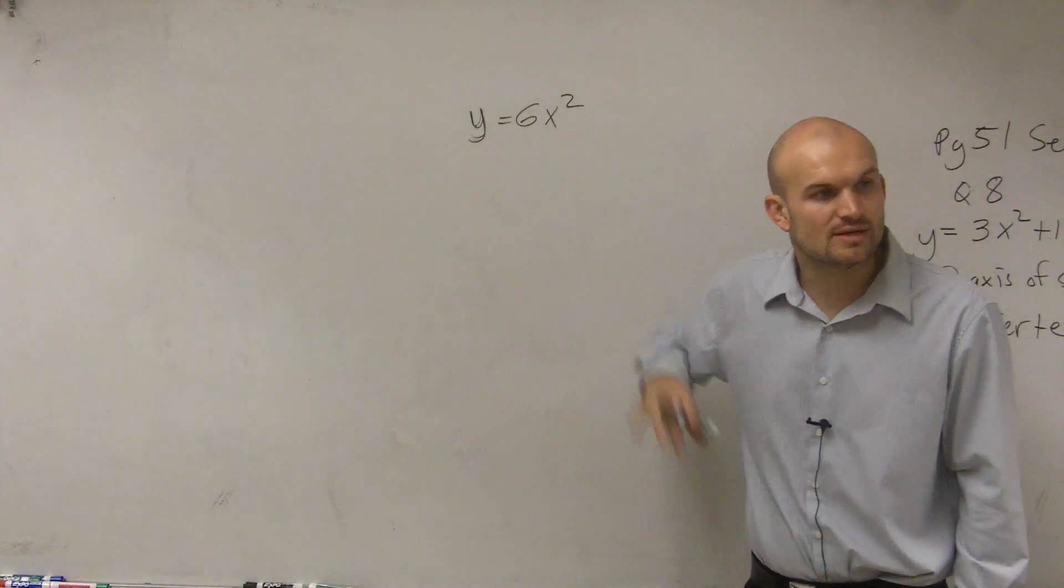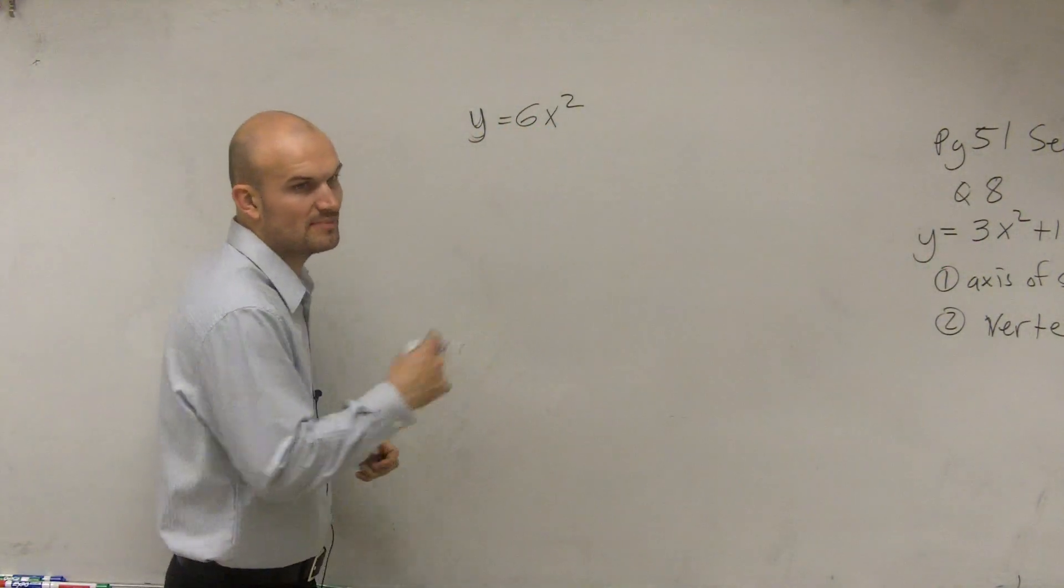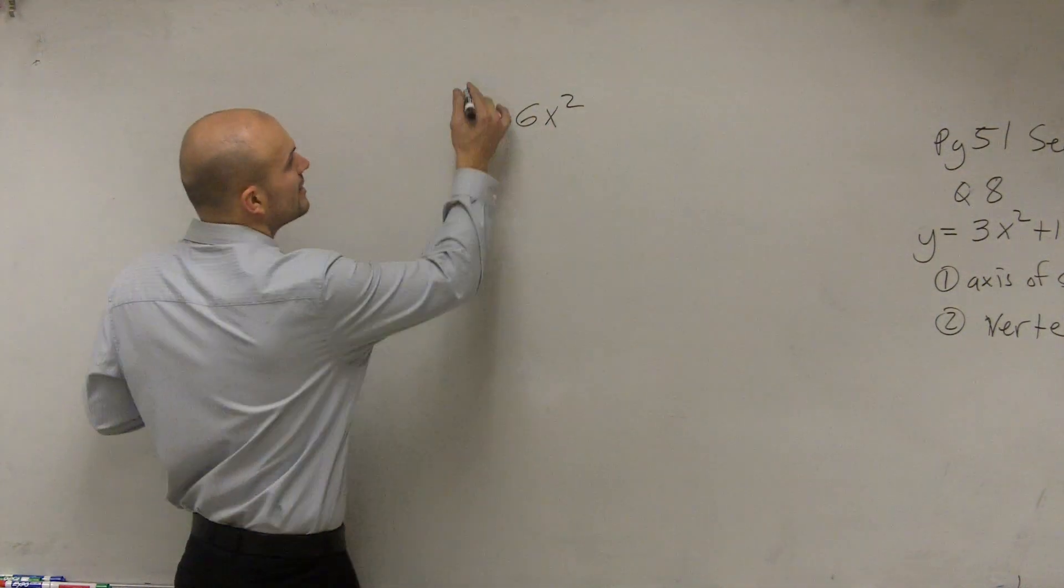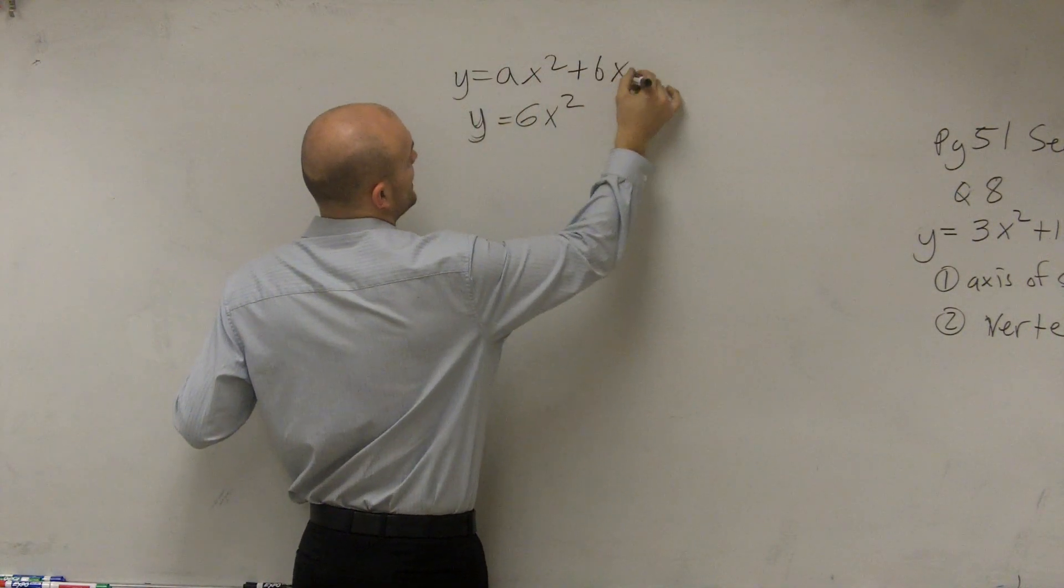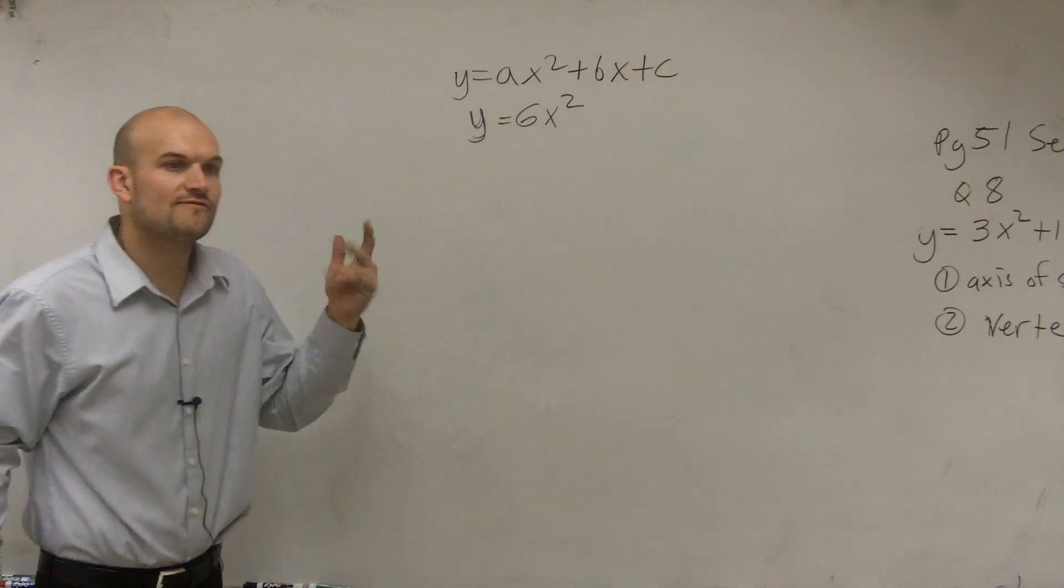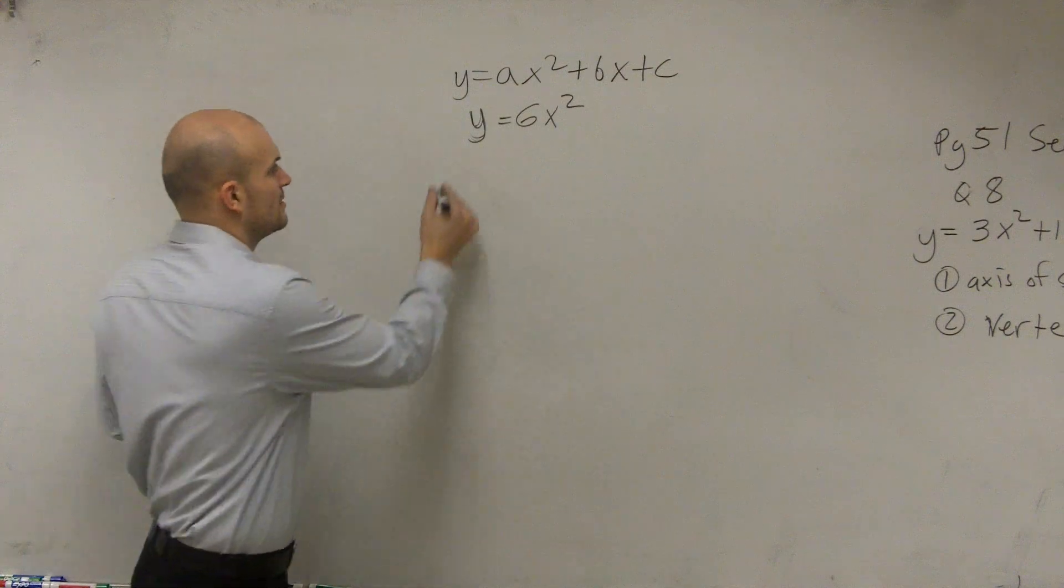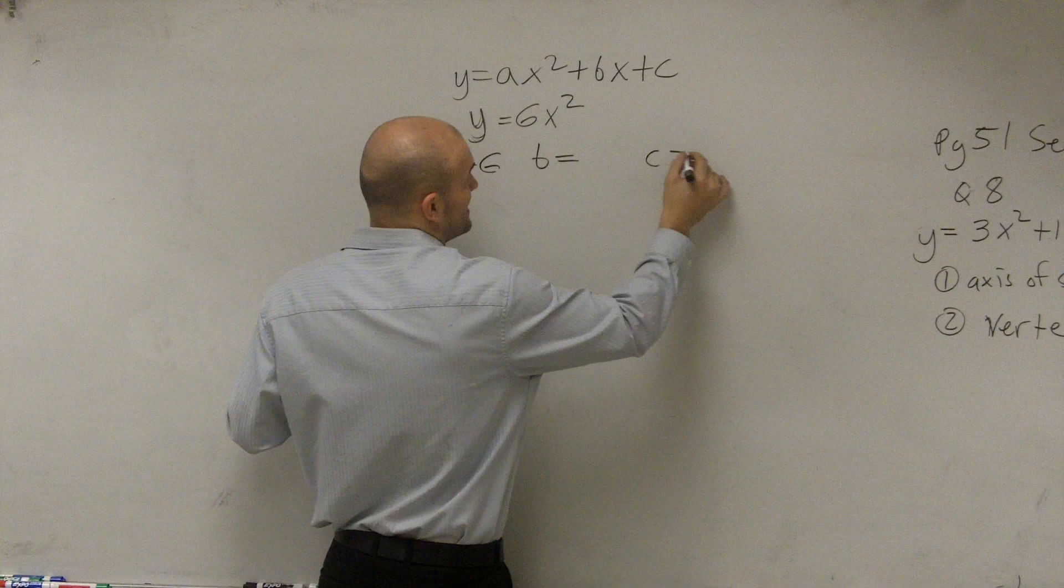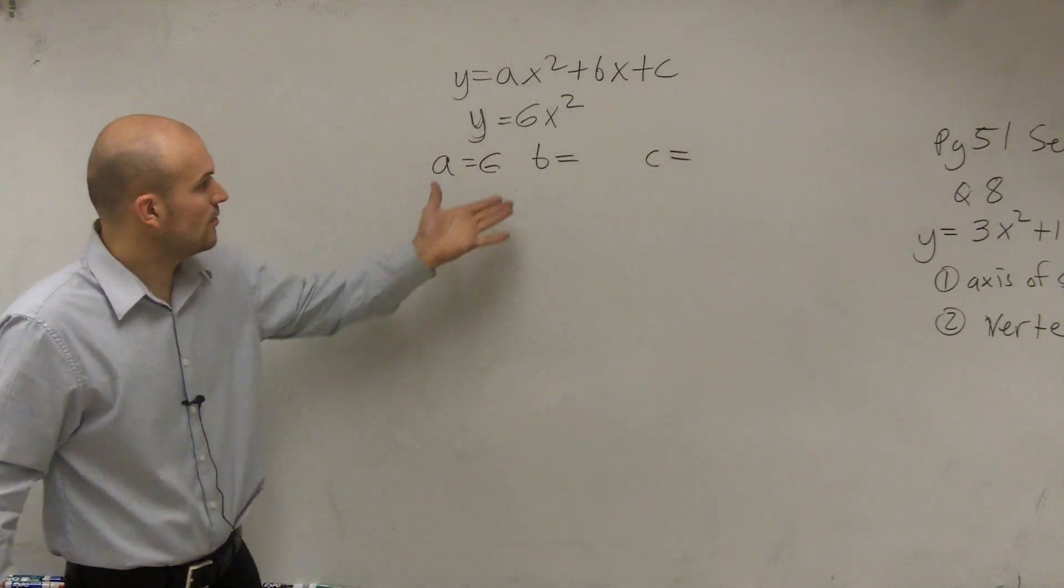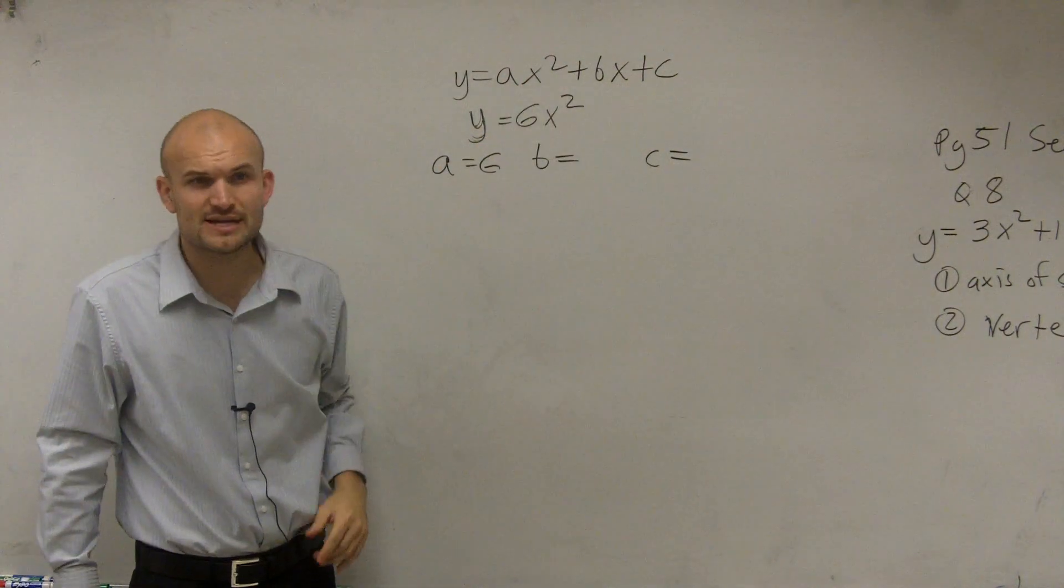So the first thing we want to do, all right, here's step one. Whenever you guys are given a quadratic, we talked about the quadratic form, Mallory, is always in the form of y equals ax squared plus bx plus c. So the first thing I want to do is label and determine what are a, b, and c. a equals 6, b equals, I don't know, and c equals, I don't know. So in this case, you guys can see, I only have one term, where a quadratic term has three.